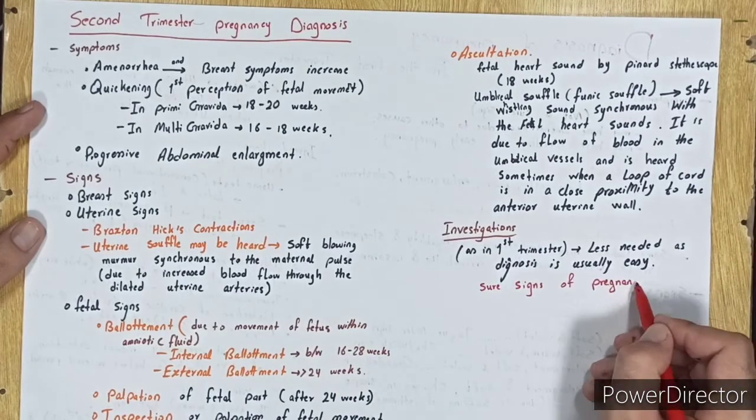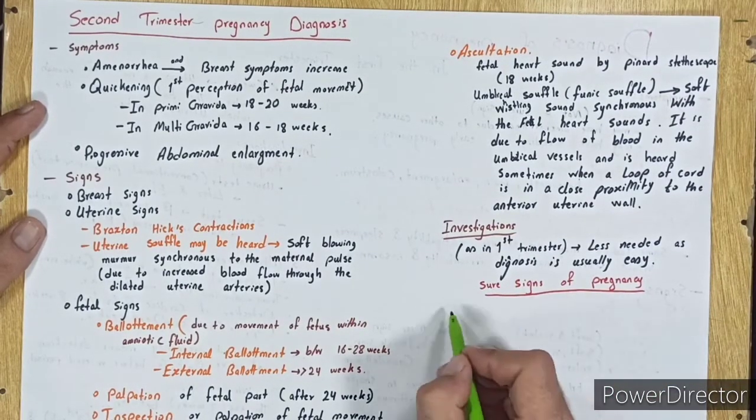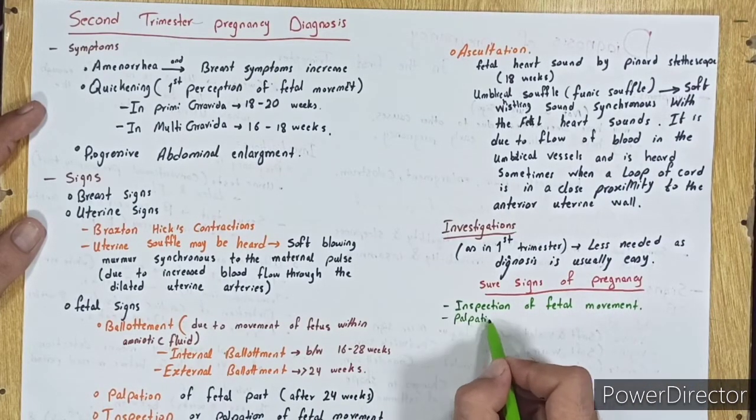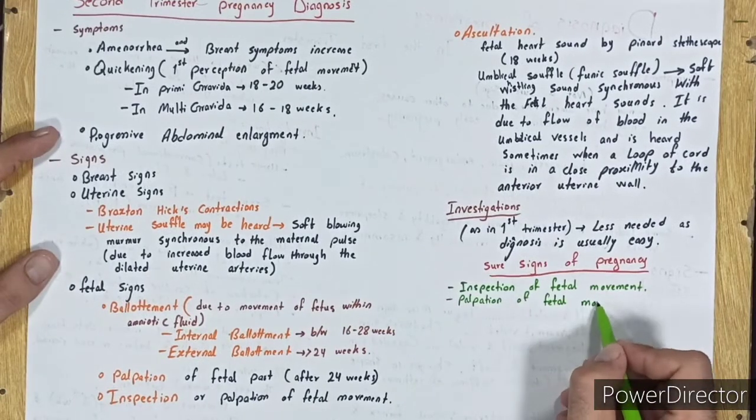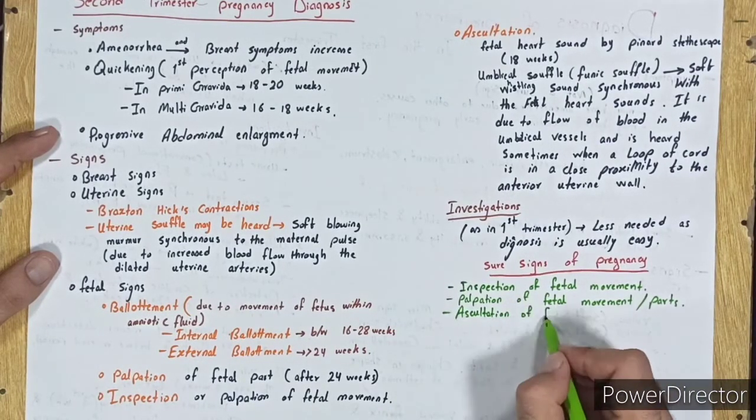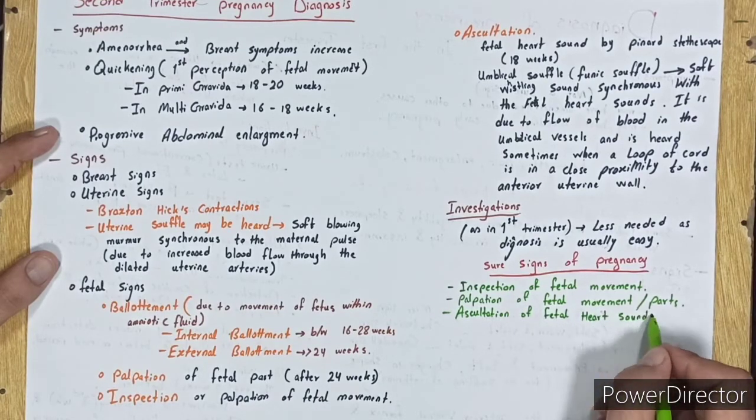Sure signs of pregnancy: First, inspection of fetal movement. Second, palpation of fetal movement and parts. Third, auscultation of fetal heart sounds or umbilical soufflé.